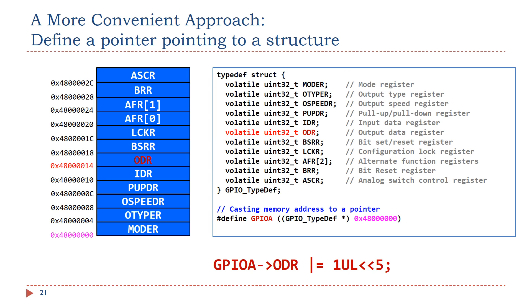In the device header file of STM32 Cortex-M processors, the memory addresses of peripherals are cast to a struct. For example, the base memory address of GPIO port A is 0x48000000 in hex. We use a macro to cast this memory address to a pointer which can point to a struct of GPIO type. As a result, we can modify the output data register ODR in this way. By using a struct, software can access all registers of a peripheral more easily.